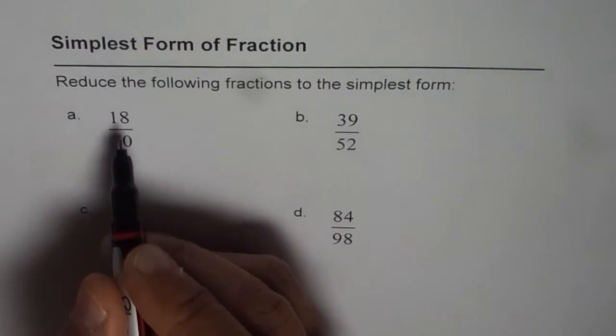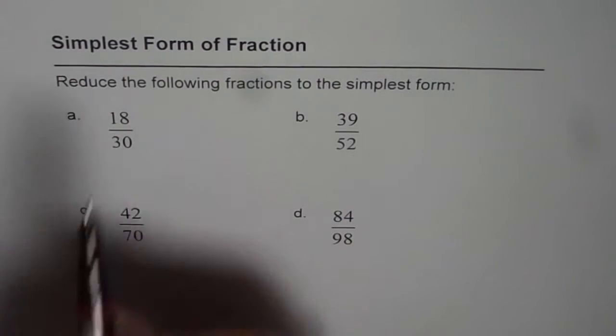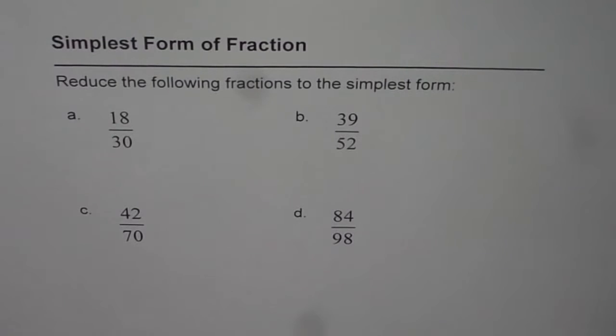Now 18 over 30, both are even numbers and the idea of writing it in simplest form is to divide them by their common factors until we reach a stage where the common factor between numerator and denominator is just 1. Nothing else.